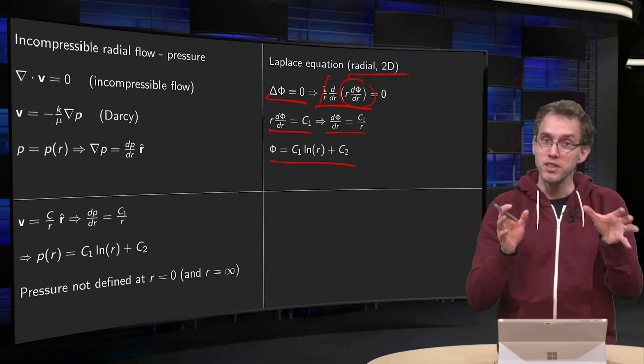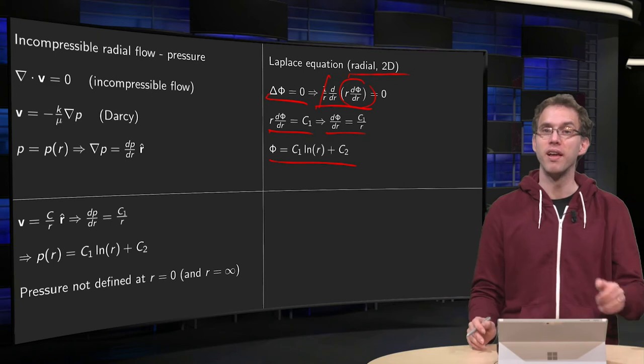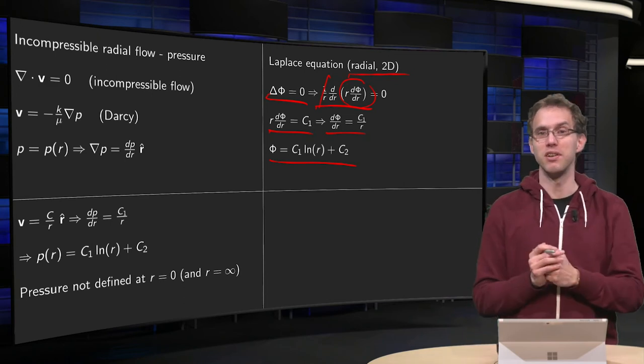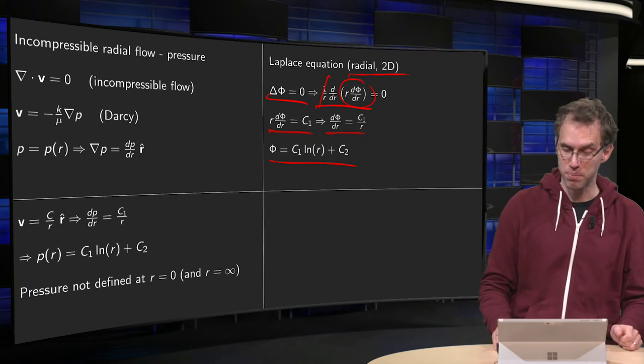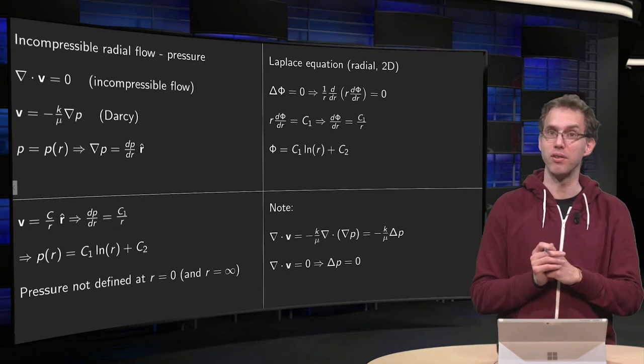So, in fact, you see, this Laplace equation is used much more often, so this logarithmic singularity is actually an inherent property of the Laplace equation in radial flow in two D.